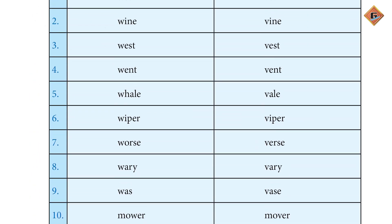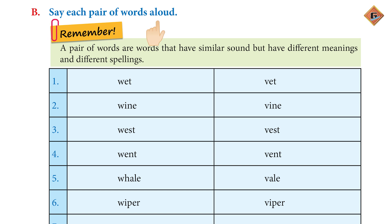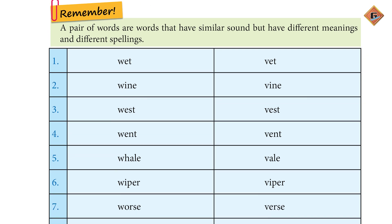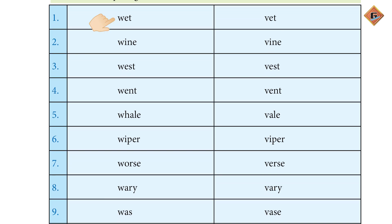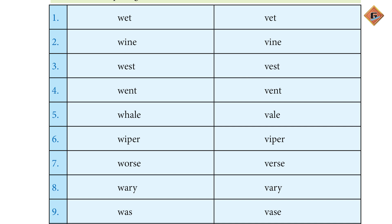Let's move to page 106, Question B. Say each pair of words aloud. These pairs of words sound similar but their meanings and spellings are different. 'Wet' means green haunt, and 'Vet' means jungle doctor. Vine V-I-N-E, which means Bale. West W-E-S-T is a direction, and Vest V-E-S-T is a garment — a men's shirt that you wear.